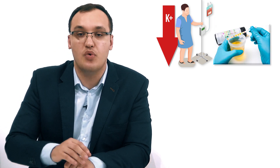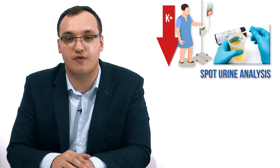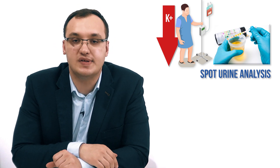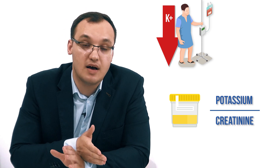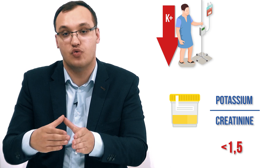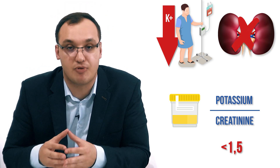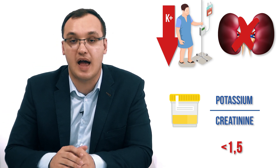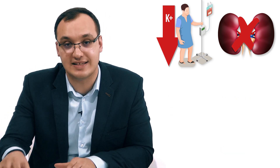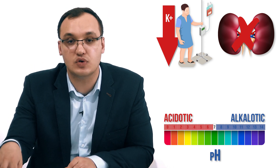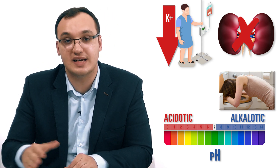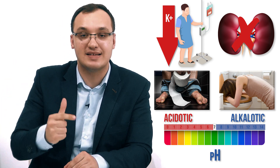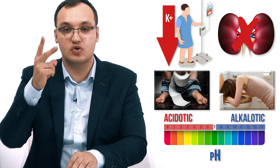To reinforce: the patient comes in with hypokalemia — low potassium in the blood. We don't know the cause, so we make a spot urine test. We see the potassium-to-creatinine ratio is less than 1.5, meaning low urine potassium — probably not a kidney problem. We then check acid-base: if it's alkalosis, it's vomiting; if it's acidosis, it's diarrhea.